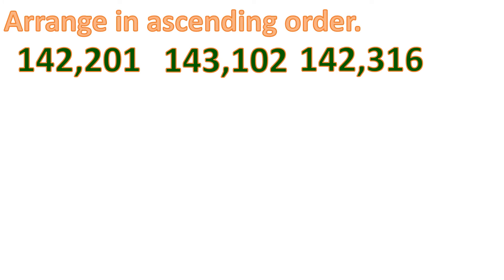Let's have another example. We have 142,201, 143,102, and 142,316. And let's arrange this in ascending order, meaning increasing, or from smallest to biggest.